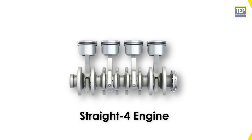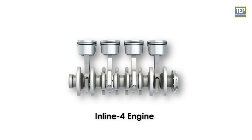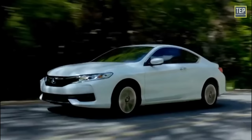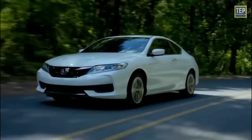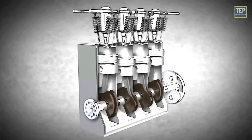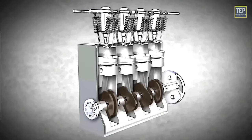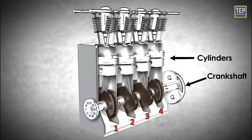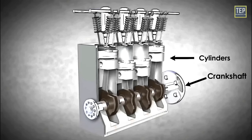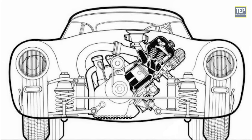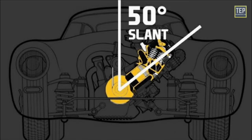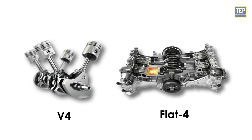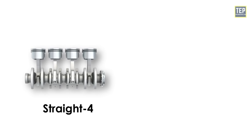The straight four engine, also known as the inline four engine, is a prevalent choice for today's economy vehicles. Its simple design allows for both efficiency and perfect primary balance. In an I4 engine, all four cylinders are mounted in a straight line along a single crankshaft and oriented in an inclined or vertical plane. When installed at an inclined angle instead of vertically, it is sometimes called a slant four. Compared with a V4 or flat four engine, a straight four engine only has one cylinder head, which reduces complexity and production cost.